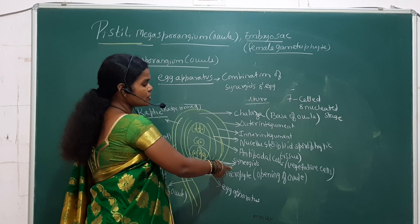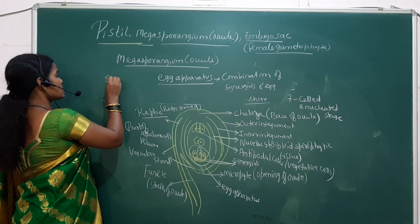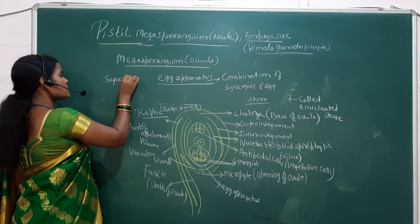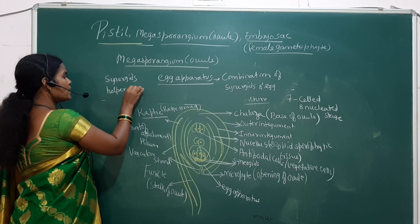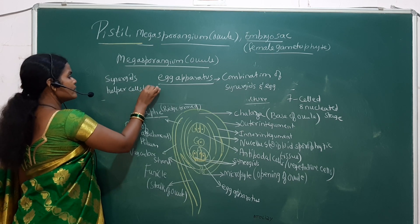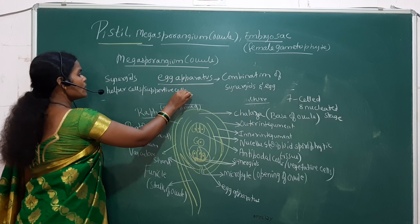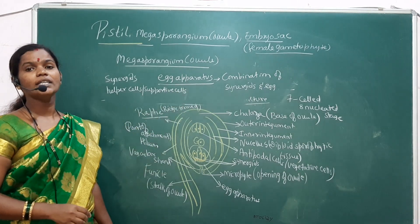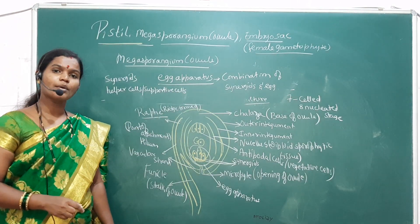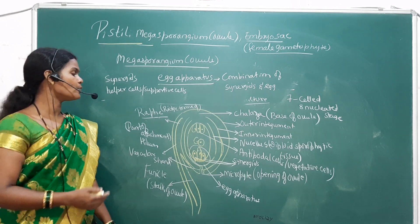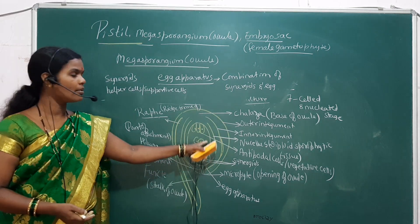The synergids are also called as helper cells or supportive cells. They are supporting the pollen tube to enter inside the embryo sac, and they are haploid in nature.